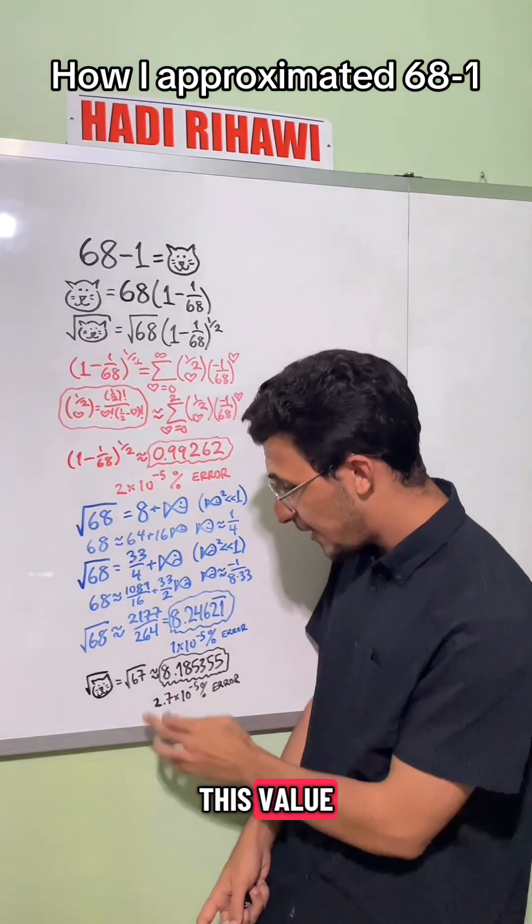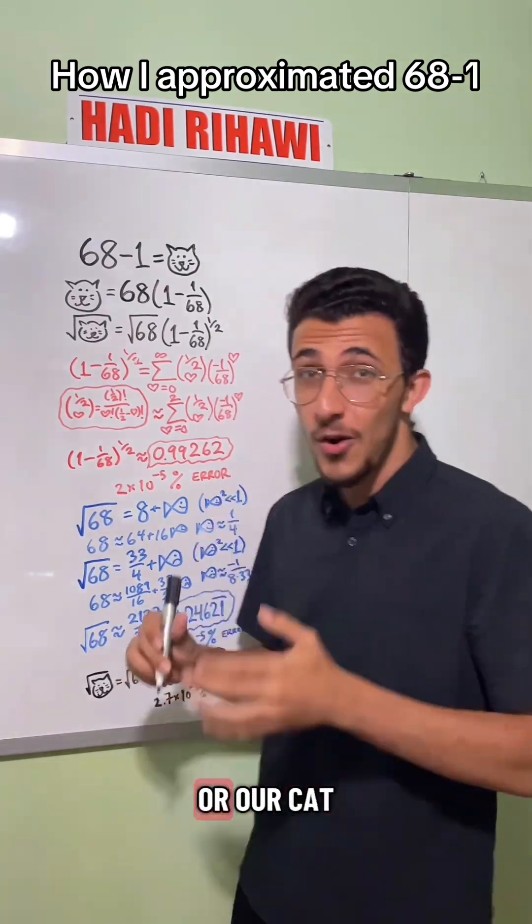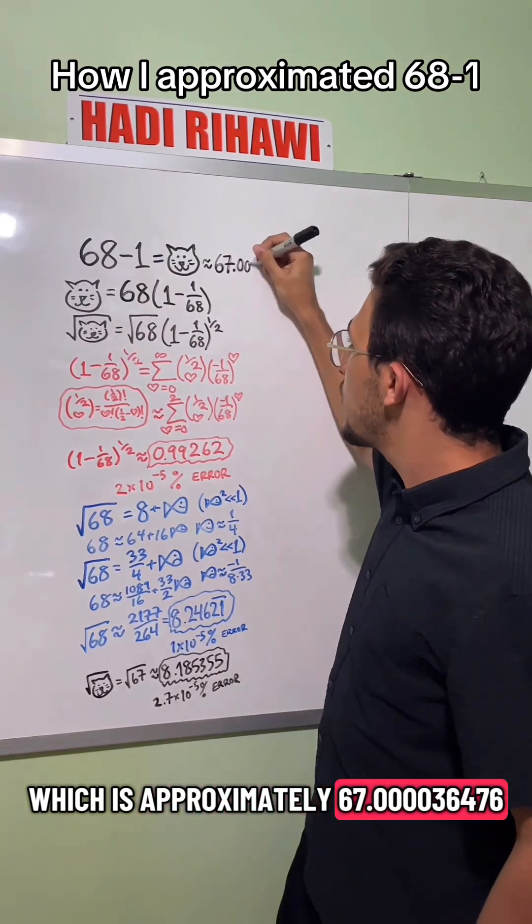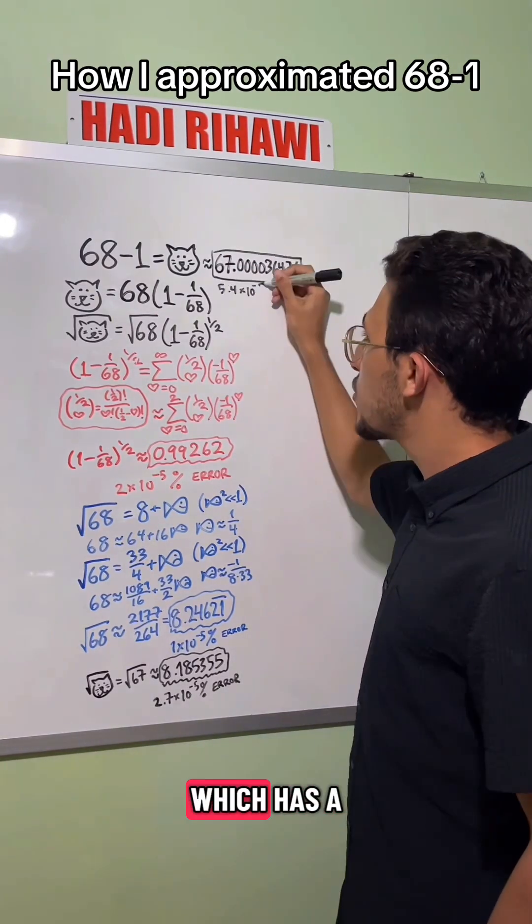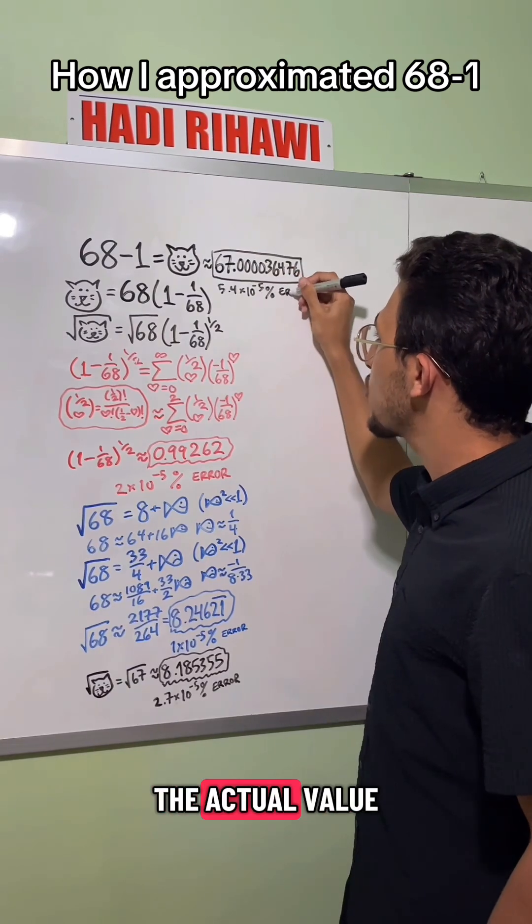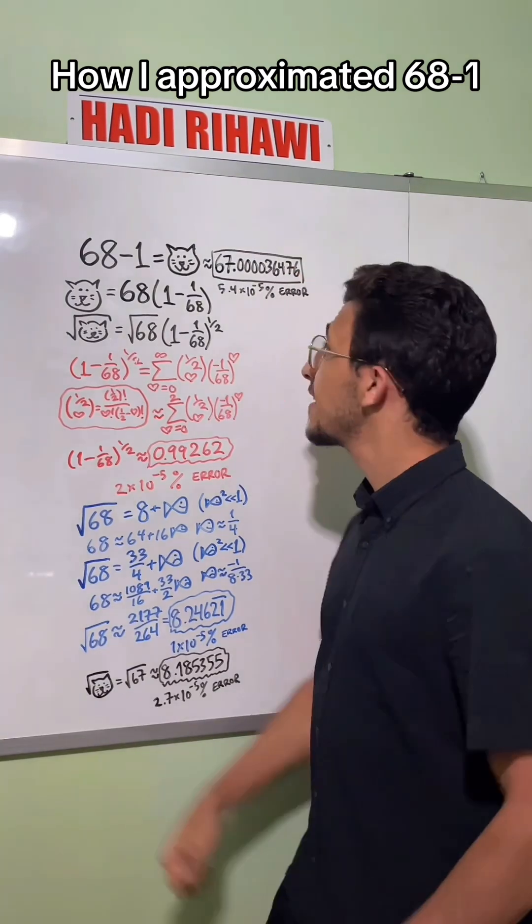Finally, by squaring this value, we'll receive what should be our 67, or our cat, which is approximately 67.00036476, which has a 5.4 times 10 to the negative 5th percent error from the actual value of 67. Thank you.